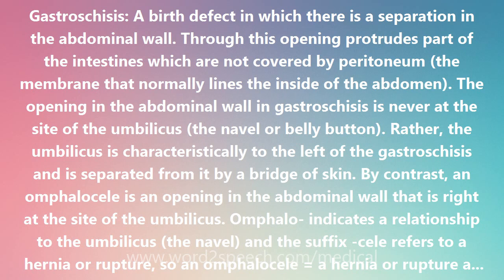Gastroschisis is due to a herniation or rupture at the base of the umbilical cord that allows variable amounts of intestine to herniate out into the amniotic fluid. This event can take place antenatally — before birth — or perinatally, around the time of birth.